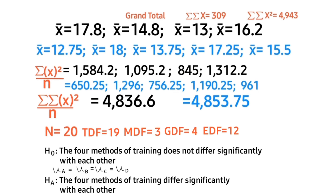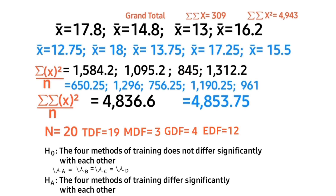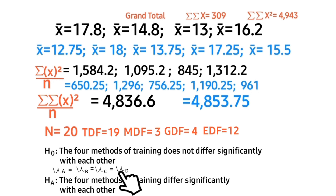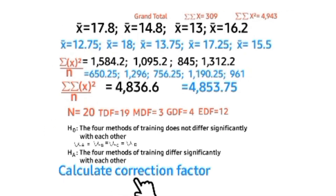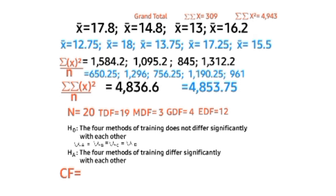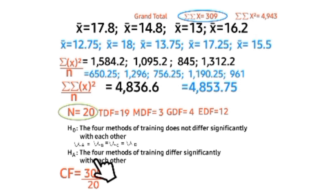Write out the hypotheses. The null hypothesis states that the four methods of training do not differ significantly with each other — that is, the mean for method A equals the mean for method B, equals the mean for method C, equals the mean for method D. The alternative hypothesis states that the four methods of training differ significantly with each other.